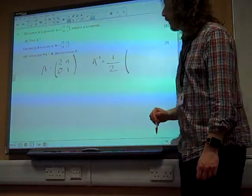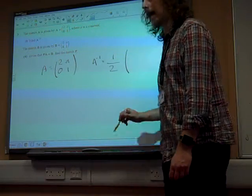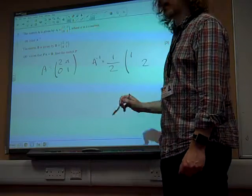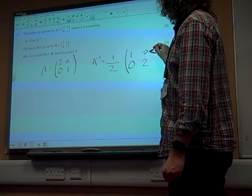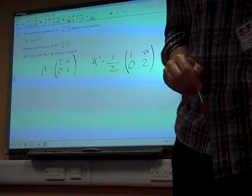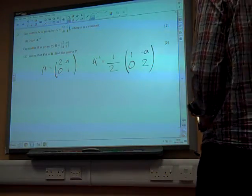Multiplied by... What do we do to find the inverse? You swap the leading diagonal and change the signs on the other diagonal. So it's going to look like that. And for those marks, that's quite an easy couple of marks, isn't it?